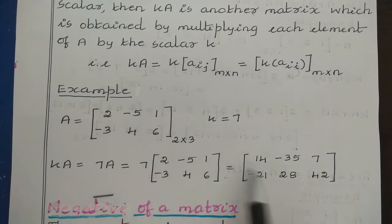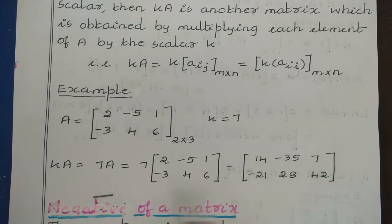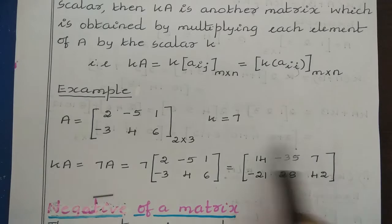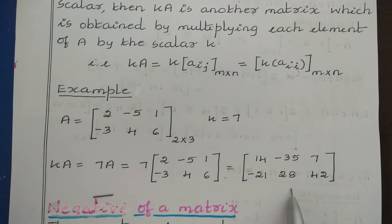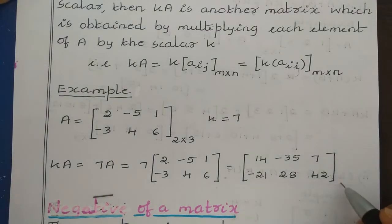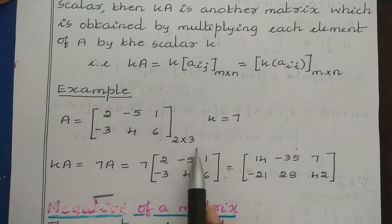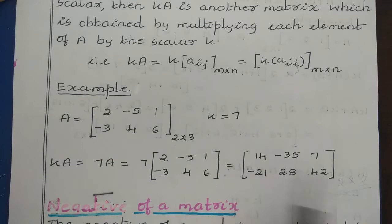So 7 into 2 gives 14, 7 into minus 5 gives minus 35, 7 into 1 gives 7, 7 into minus 3 gives minus 21, 7 into 4 gives 28, and 7 into 6 gives 42. This is the resultant matrix after multiplying a scalar with the matrix. You can observe we still have 2 rows and 3 columns — after multiplying a scalar with the matrix, the order does not change. The order remains 2 cross 3.